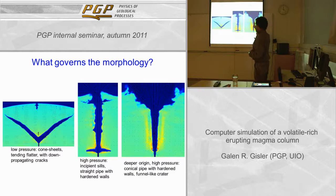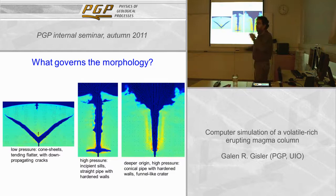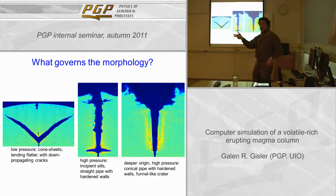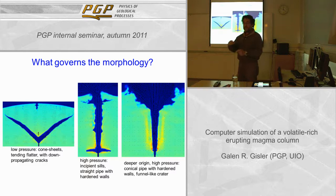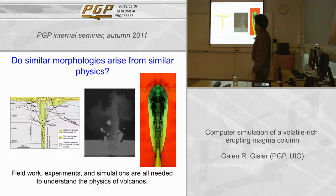At low pressure I get cone-sheets. At high pressure I get incipient sills sometimes, but a straight pipe with hardened walls. If I have very high pressure and deeper origin, then I get a conical rather than cylindrical pipe and a maar feature at the top. Given that we can understand in simulations and in physical experiments what produces different morphologies, how much does that really tell us about what goes on in nature? If I stir milk in a coffee cup I get something that looks like a spiral galaxy, but I can't claim to understand a spiral galaxy on that basis. Similar morphologies can arise from very different physical processes. We really need to connect field work, experimental work, and simulation work to understand the physics of volcanoes.